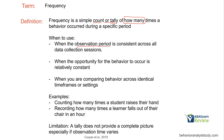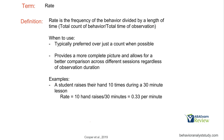Frequency is not hard to understand — it's a count. How many times does a student raise their hand? How many times does a learner fall out of the chair in an hour? Notice that we're not saying 'per hour' — if we were recording frequency, that number would just be 20 times or whatever it is. We have not added the time component yet. Limitation: a tally does not provide a complete picture, especially if observation time varies. If you say how many times the student raised her hand and I say 10, you know it happened 10 times, but there's no other information — how do you really assess that number?